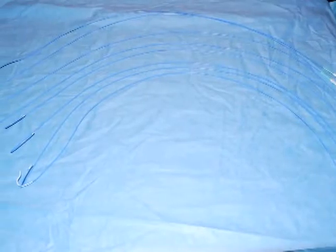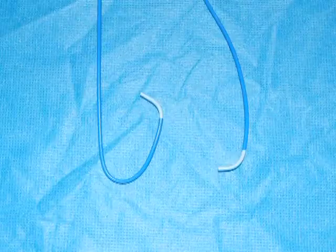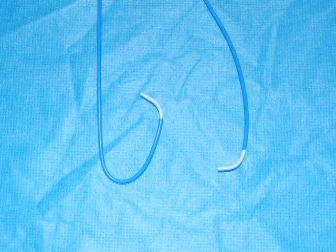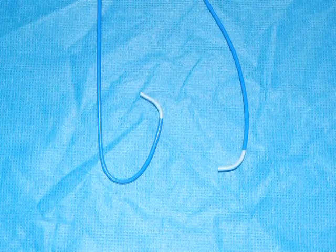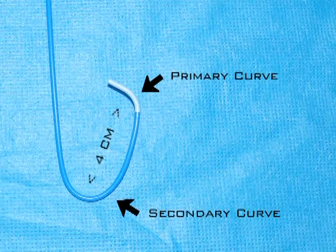Catheters are long thin tubes, like pieces of spaghetti, made of plastic. The designation JL4 or JL3.5 indicates Judkins left 4 centimeter, indicating the distance between the tip and the secondary curve.